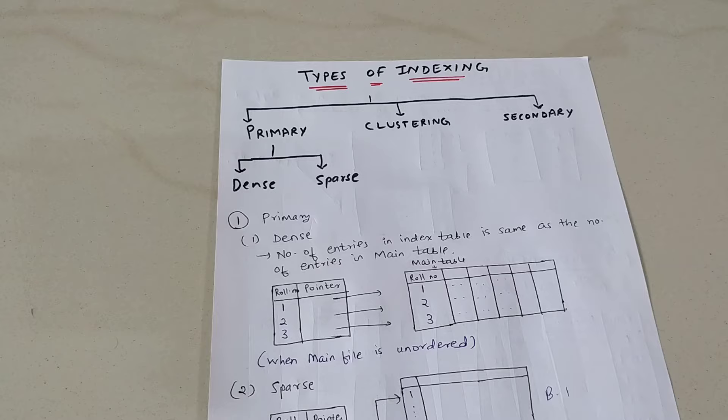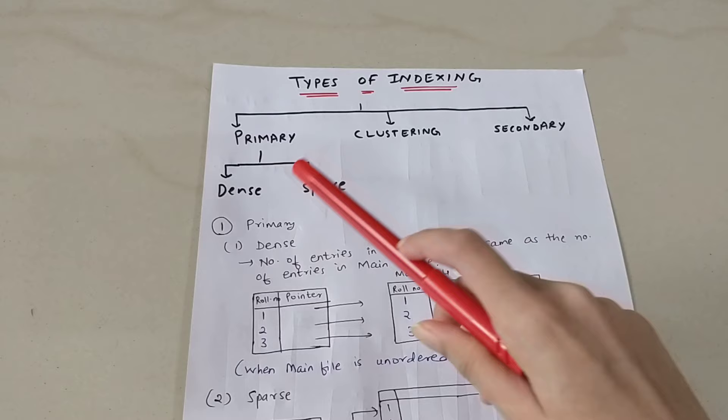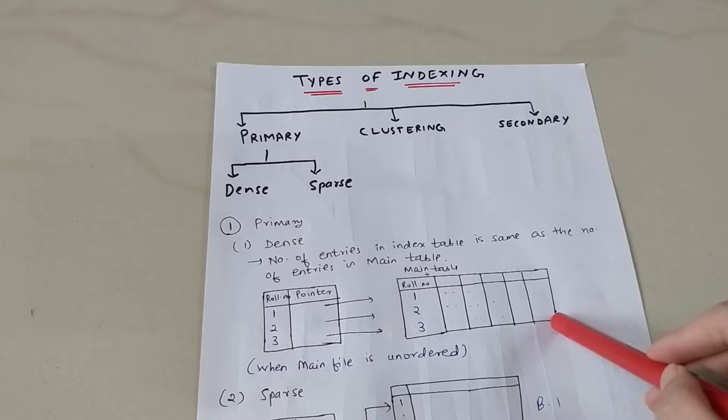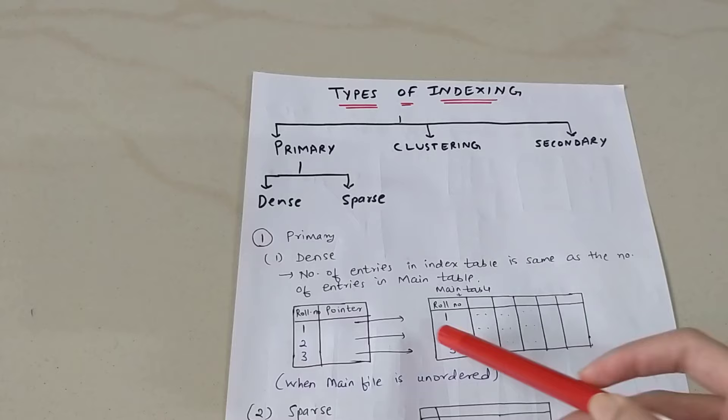Indexing is used to reduce the time to access a particular record. The three types of indexing are: primary, clustering, and secondary. Let's understand primary first. Primary indexing is basically when you have primary keys in your table. Within primary indexing, we have two types: dense and sparse.